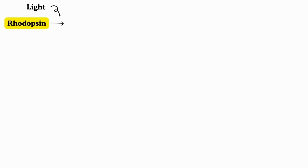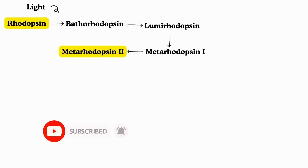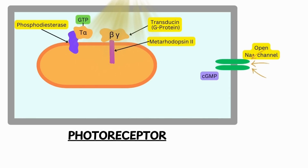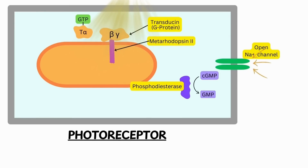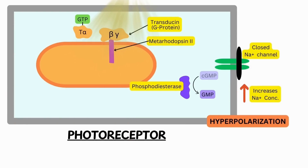During photoexcitation, rhodopsin is converted into bathorhodopsin, then lumirhodopsin, then metarhodopsin 1, and finally metarhodopsin 2, which induces the following changes in transducin: GDP is replaced by GTP, and the whole complex dissociates into a beta-gamma complex and an alpha-GTP complex (GTP-alpha). GTP-alpha activates phosphodiesterase, which converts cyclic GMP to GMP. The cyclic GMP level falls in the cell, causing closure of the sodium channel and preventing sodium influx. The increased concentration of sodium outside results in hyperpolarization, and that is how visual impulse is generated.